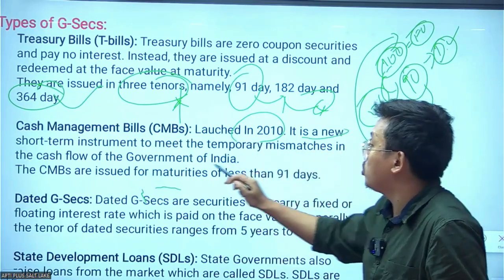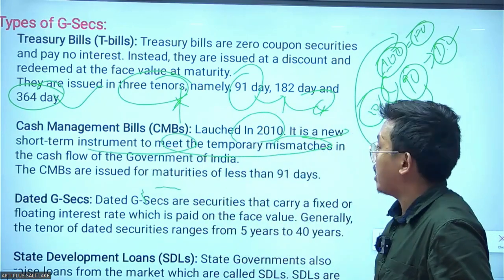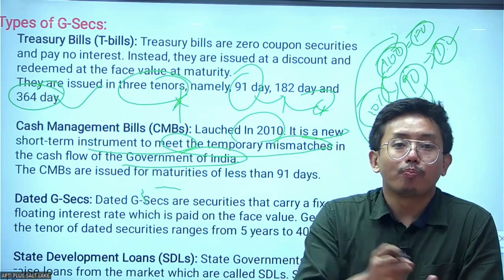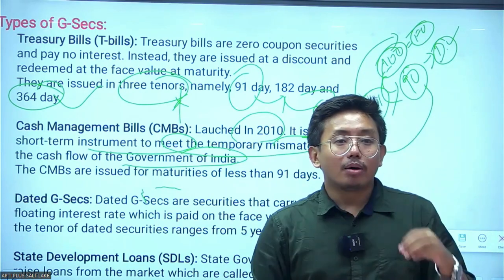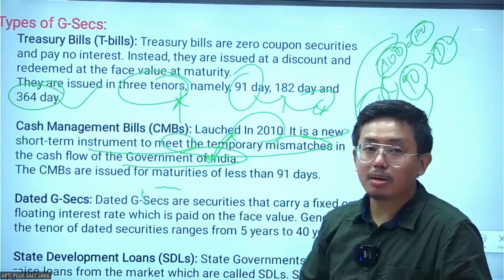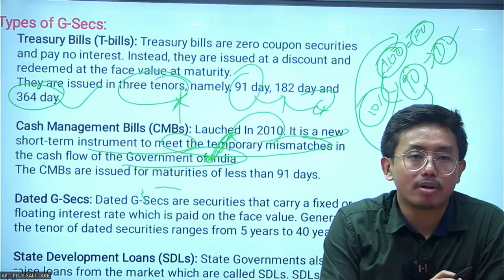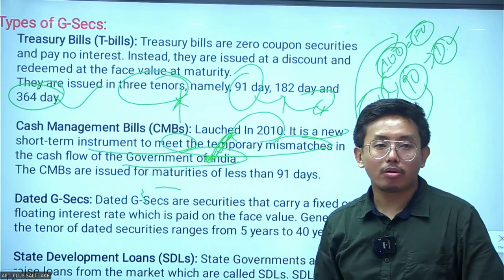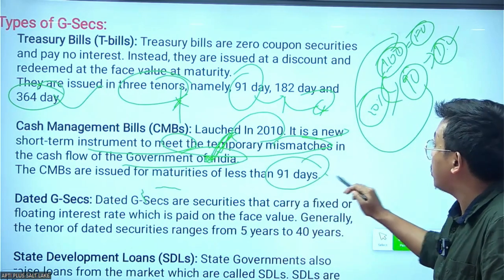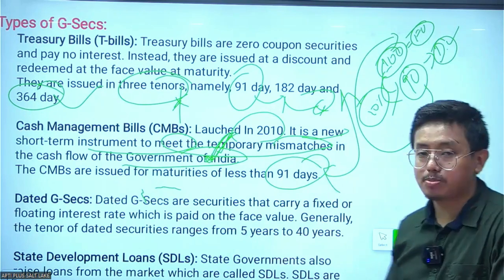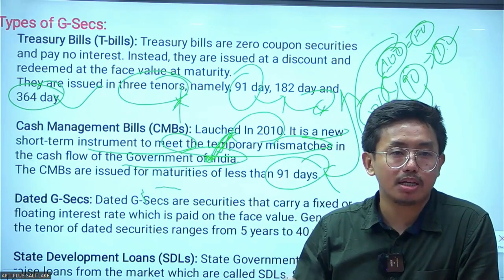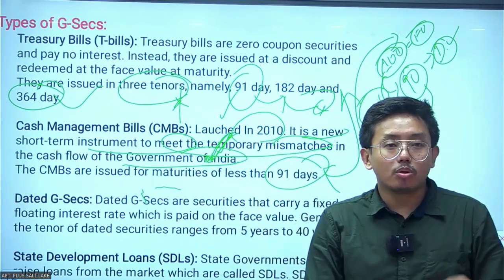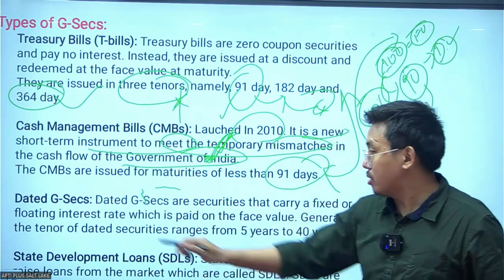Cash Management Bills were launched by the Government of India in 2010 as a new short-term instrument to meet temporary mismatches in the government's cash flow. The key difference from T-bills is that Cash Management Bills are issued for maturities of less than 91 days, while Treasury Bills are issued for 91 days and above.